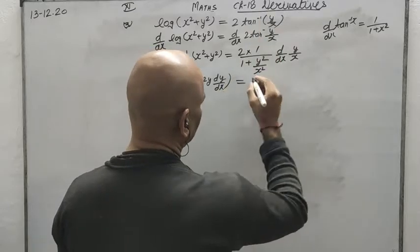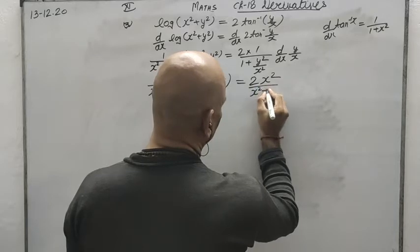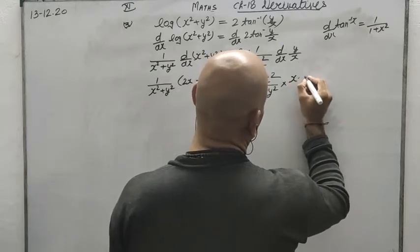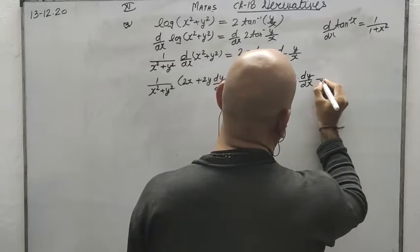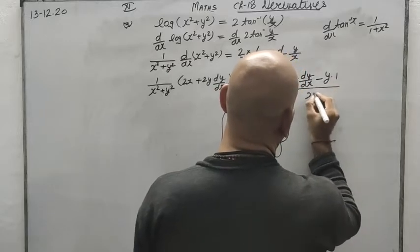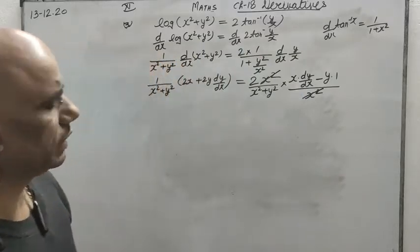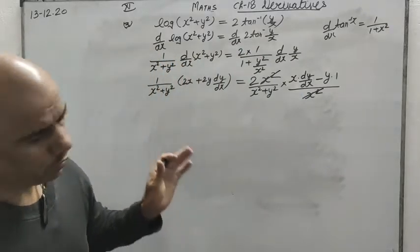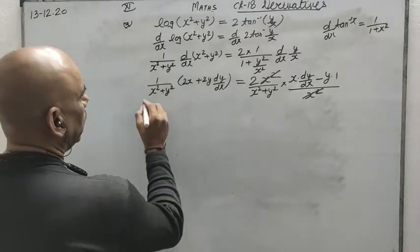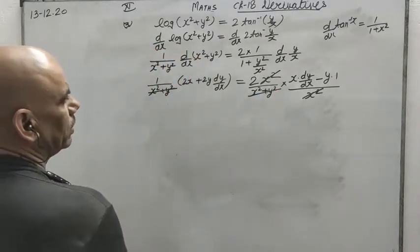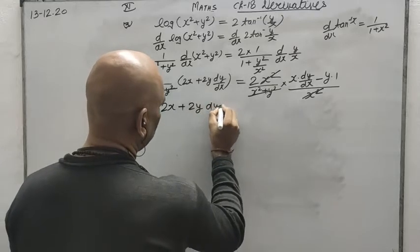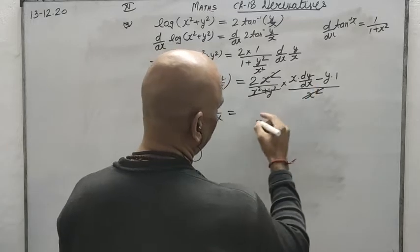Taking x squared common and simplifying, the right side becomes 2x squared upon (x squared plus y squared). For d over dx of (y upon x), we apply the division rule: x times dy by dx minus y times 1, all upon x squared. The x squared terms cancel with (x squared plus y squared) on both sides. What remains is: 2x plus 2y dy by dx equals 2 times (x dy by dx minus y). Taking 2 as common and cancelling, we get: x plus y equals (x minus y) dy by dx, so dy by dx equals (x plus y) upon (x minus y).